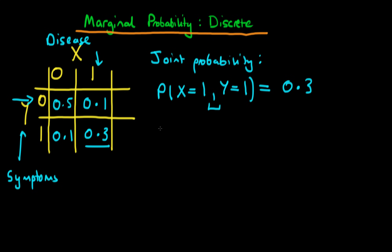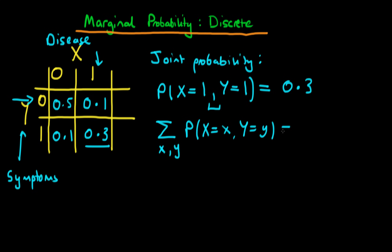We've already noted that because we're talking about probabilities, the sum across all potential values of X and all potential values of Y of the joint probability P(X=x, Y=y) must equal one, because probabilities by definition have to sum to one.